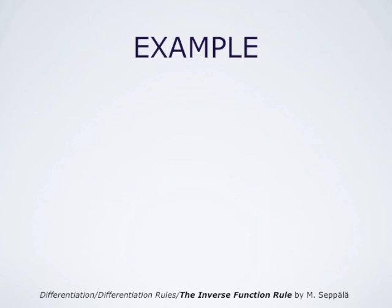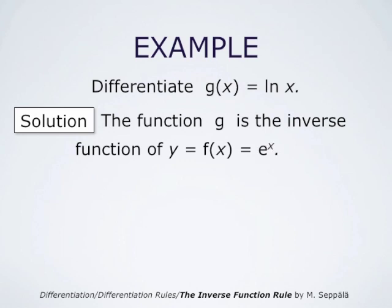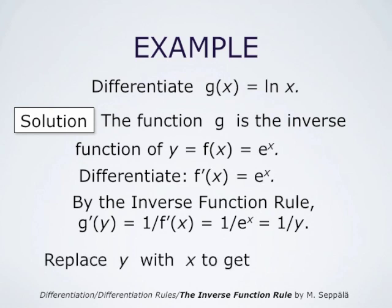As an example of the use of the inverse function rule, consider the natural logarithm of x. This function g is the inverse function of the exponential function, so g is the inverse of f(x) equals e to the power x. The derivative of the exponential function is itself, so f′(x) equals eˣ. By the inverse function rule, g′(y) equals 1 over f′(x), which is 1 over eˣ, which equals 1 over y. Replacing y with x gives the formula: the derivative of ln(x) equals 1 over x.